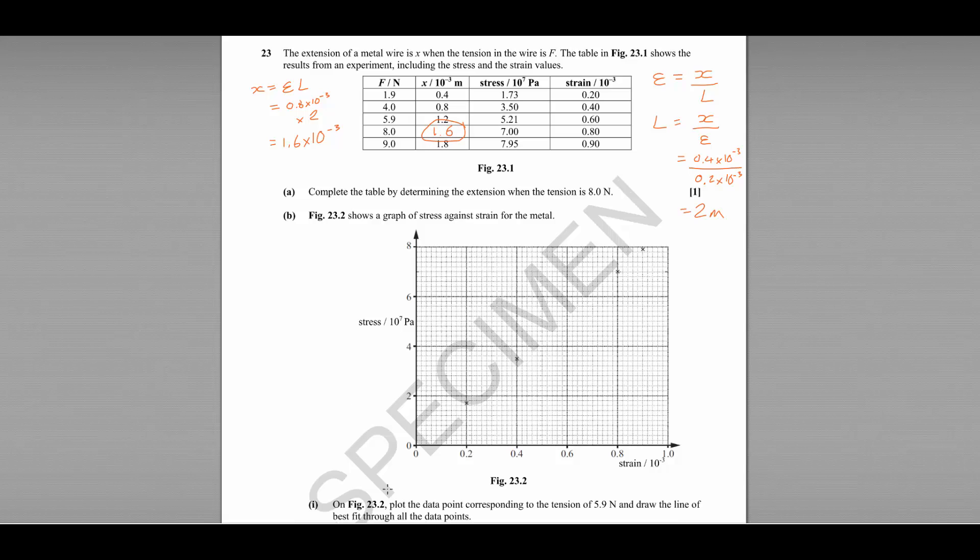Part B, I, asks us to plot the data point corresponding to the tension of 5.9 newtons and draw the line of best fit through all of the data points. So at 5.9 newtons, we have a stress of 5.21 pascals.